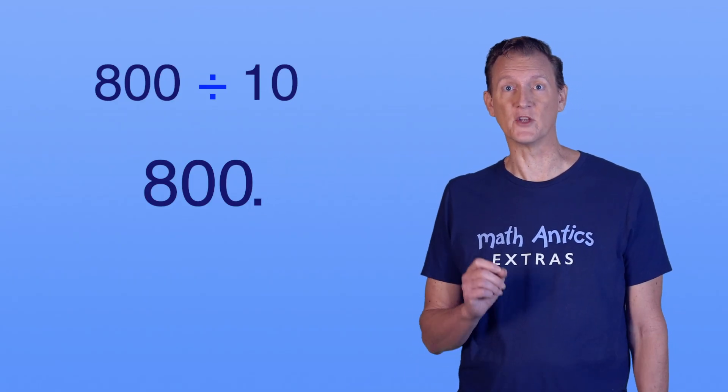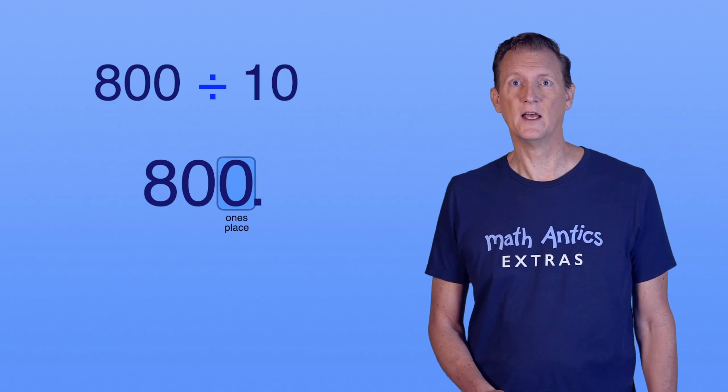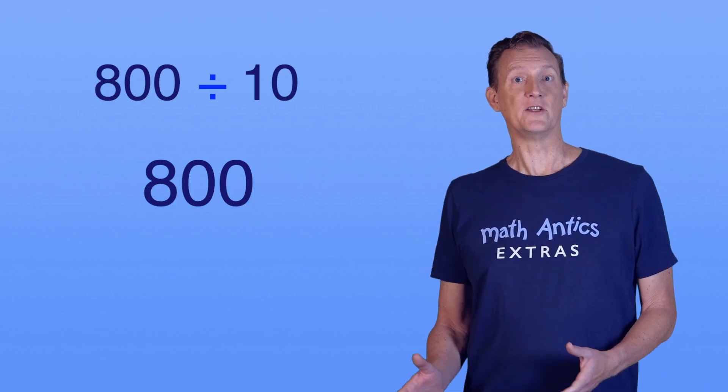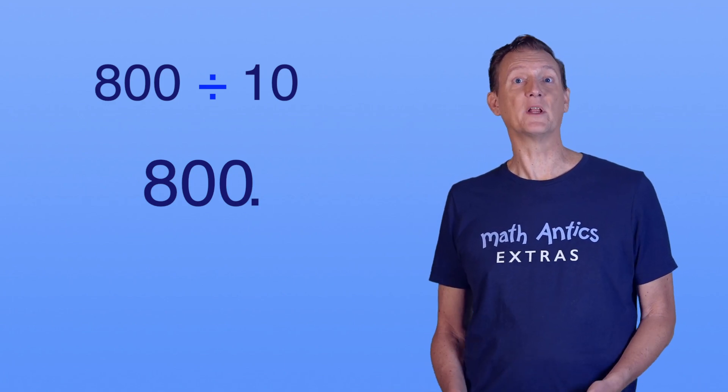Ah, remember the decimal point is always to the right of the ones place. But with whole numbers, we usually don't show it. Let's show the decimal point, and then shift it one place to the left.